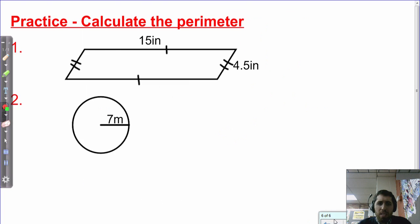So as always, I'm going to leave you with some examples to do on your own. This first one is a parallelogram. Pay attention to the hash marks. We have 15 inches on top, 4 and a half inches on the sides. And then I have a circle. I want you to find that perimeter or circumference if the radius is 7 meters. Best of luck. I'll catch you later.